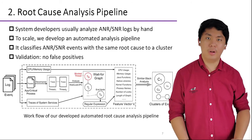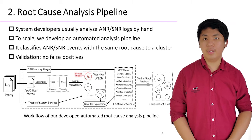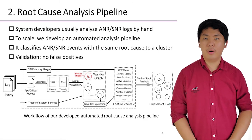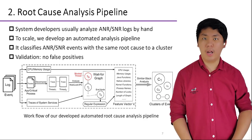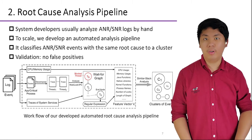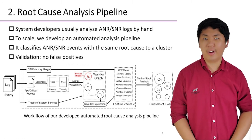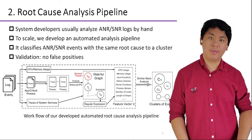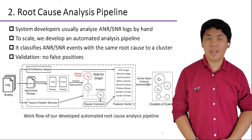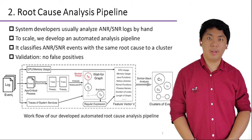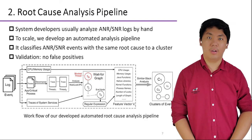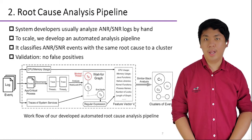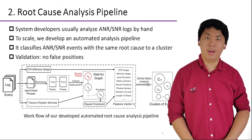To figure out the root causes of an ANR or SNR event, system developers usually analyze the corresponding log by hand. However, our large-scale context requires methods that are much more scalable. Therefore, we devised an automatic analysis pipeline to facilitate diagnosis. Our proposed pipeline first leverages a wait-for graph to locate the critical blocked thread, and then uses similar stack analysis to classify ANR or SNR events to a root cause cluster if they exhibit similar symptoms in the thread's core stacks and system states. Validation shows that it produces no false positives in analysis.